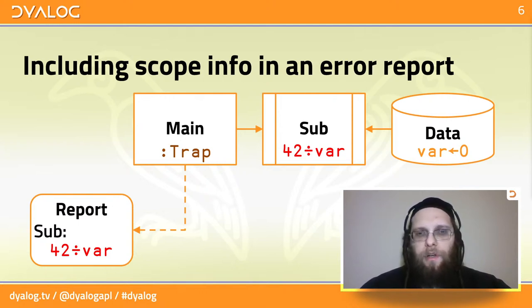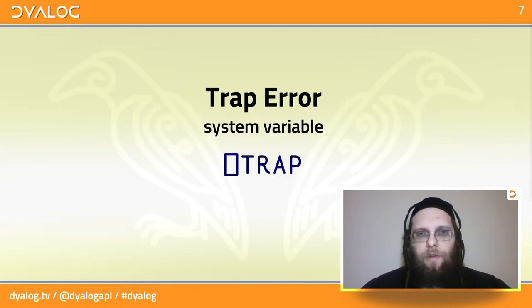That reporting tool has access to the last expression that was executed that caused the error. But because we have moved away from the scope in which the error happened, then the actual cause of the error which was the faulty data is invisible to the error reporting tool. We have left the sub function and we are now operating from within the main function. We've been calling something from the main function. And in order to deal with that, we have quad trap.